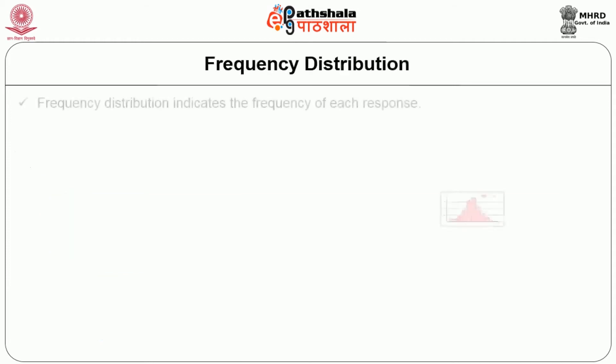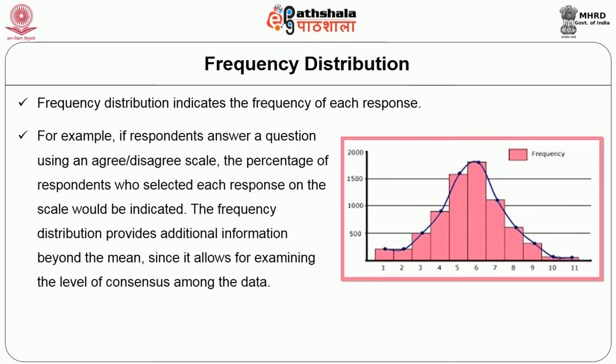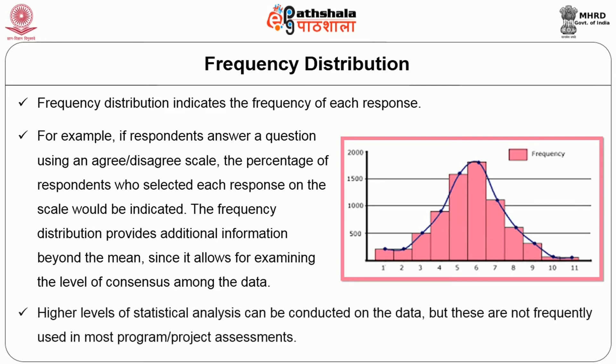Frequency distribution indicates the frequency of each response. For example, if respondents answer a question using an agree or disagree scale, the percentage of respondents who selected each response on the scale would be indicated. The frequency distribution provides additional information beyond the mean since it allows for examining the level of consensus among the data. Higher level of statistical analysis — that is, T-test, factor analysis, regression, and others — can be conducted on the data, but these are not frequently used in most program assessments.